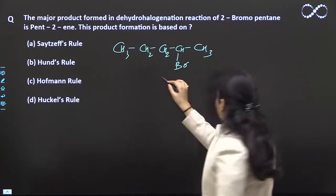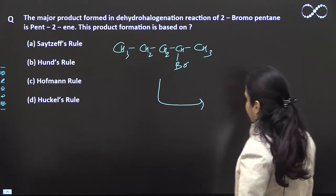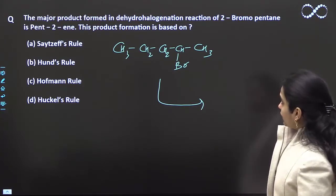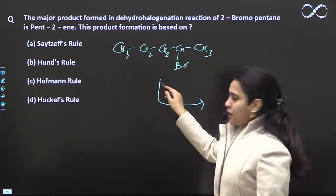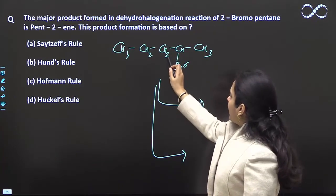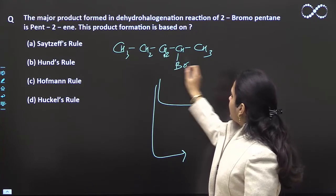They are saying that when we do dehydrohalogenation, then why is pent-2-ene the major product? Basically, two products can form. You can either get a double bond here, or hydrogen can go from here, or from here.